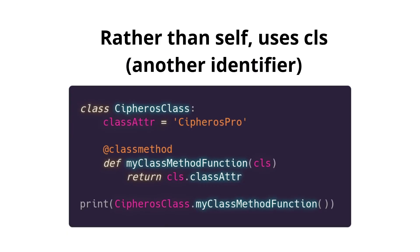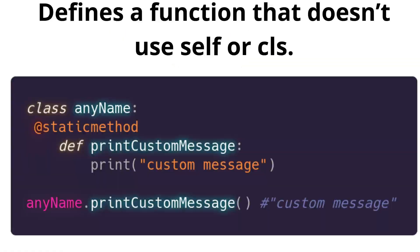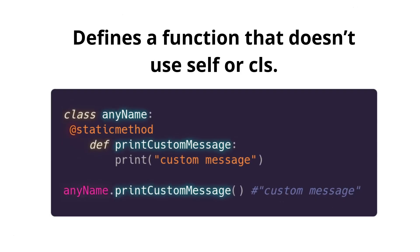Number two: @classmethod. Rather than 'self', it uses the 'cls' keyword. This is just another identifier — we know 'self', but 'cls' works similarly to the 'this' keyword in JavaScript, to access the attributes of the class the attributes belong to. With @staticmethod it is basically the opposite, because we don't use 'self' or 'cls'. These are just for methods that do not interact with the attributes of the class — for example, a custom error message.